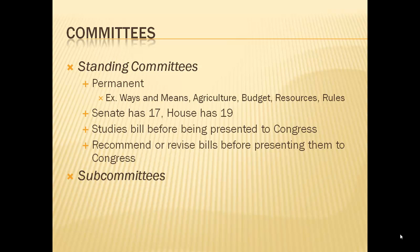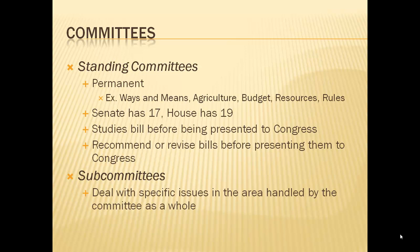Our second type of committee is a subcommittee. The prefix 'sub' means something below, so these are committees within standing committees that sit below them. They deal with specific issues in the area handled by the committee as a whole. For example, if we have budgeting as a committee, we will have a subcommittee that deals with taxes, one that deals with expenditures, one with long-term forecasting, and so on. Senators or representatives in these subcommittees become experts in that area.